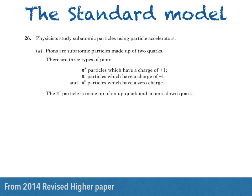Pions are subatomic particles made up of two quarks. There are three types of pion: pi plus particles which have a charge of +1, pi minus particles which have a charge of -1, and pi naught particles which have a zero charge. The pi plus particle is made up of an up quark and an anti-down quark.